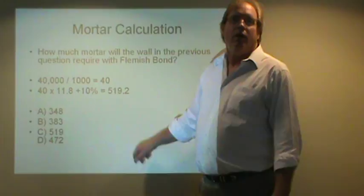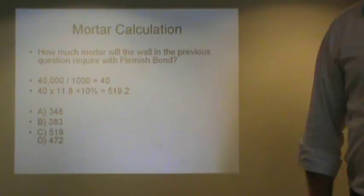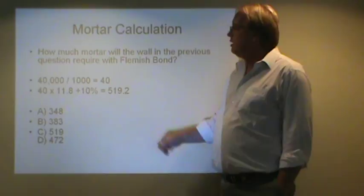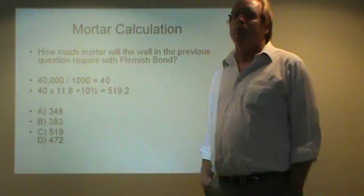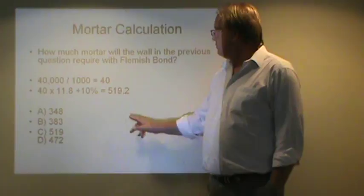Why do we add 10 percent? Why are you using 11.8? I thought it was 6 inch. No, it's a double width wall, so it's an 8 to 9 inch one. Because on the bottom it says Dutch, English, and Flemish bond add about 10 percent, and I didn't read that down on the bottom.